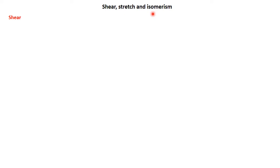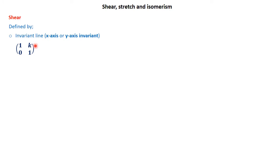We begin with shear. A shear transformation is defined by two things. Whenever a question has been given and you have performed the transformation and it turns out it's a shear, you'll be required to explain or describe the transformation. The first defining element is an invariant line — normally the x or the y axis. The matrix of transformation for a shear will either be of the form (1, k, 0, 1), where k is a number, and when it's that way it will be an x-axis invariant.